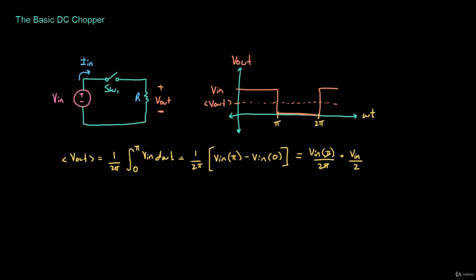That makes sense, because we've turned switch one on during half of the cycle and then off during the rest of the cycle, so the average of the output voltage equals half of the input voltage. Now in more general terms, let's say the period is T — we don't define it as 2π, we just leave it in general terms. We call the point where the switch is on d times T.